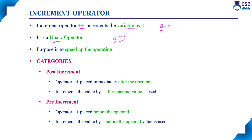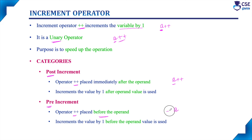There are two categories of increment operator. One is post-increment and another one is pre-increment. In post-increment, the operator plus plus is placed immediately after the operand. That is the operand first and then the operator placed immediately after — that is post-increment. In pre-increment, the operator plus plus is placed before the operand. So in post-increment, first the operand is placed and then the operator. In pre-increment, first the operator is placed and then the operand.